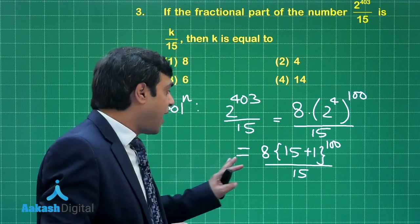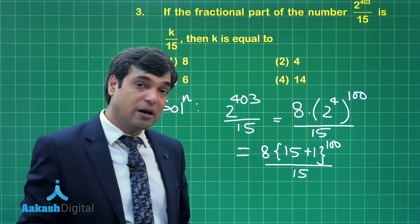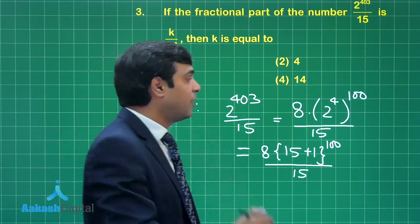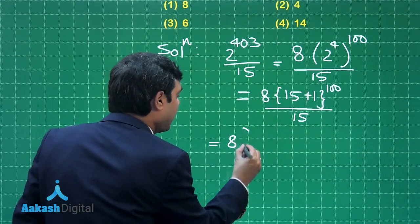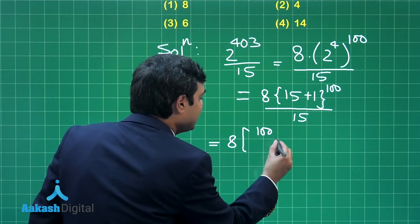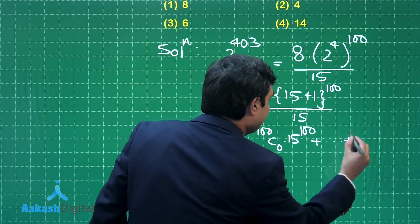Finally, writing it as 8 × (15 + 1)¹⁰⁰ divided by 15. Now when you expand binomially (15 + 1)¹⁰⁰, you can see 15 is there in each term except the last, which has the term 1. So just expand it: 8 × [¹⁰⁰C₀ × 15¹⁰⁰ + ... + ¹⁰⁰C₉₉ × 15 + ¹⁰⁰C₁₀₀], or simply 1, divided by 15.